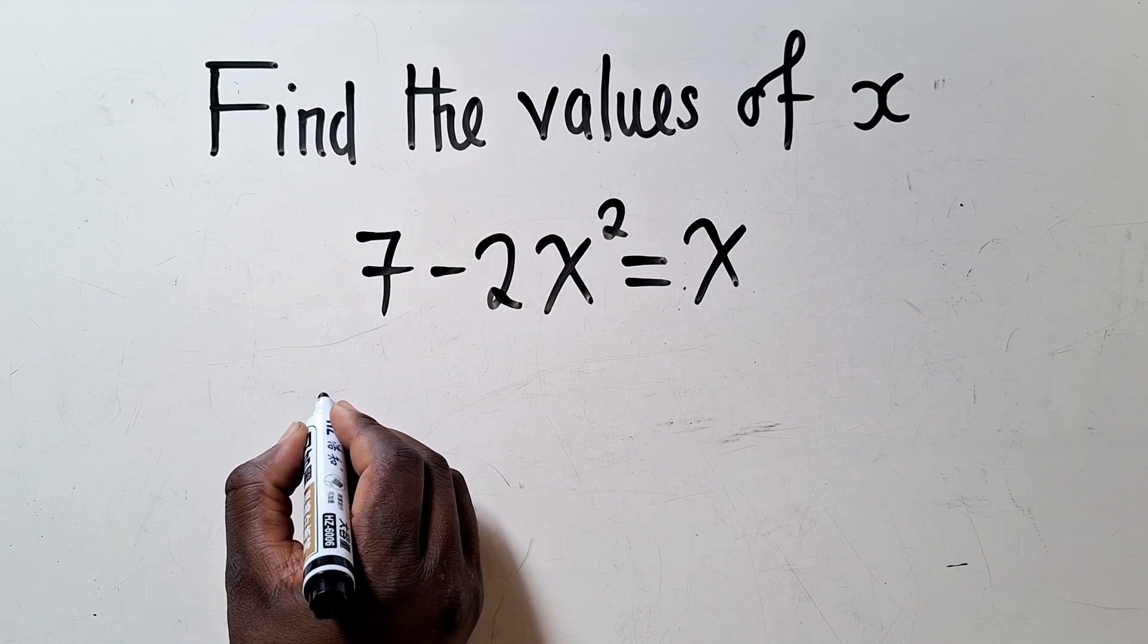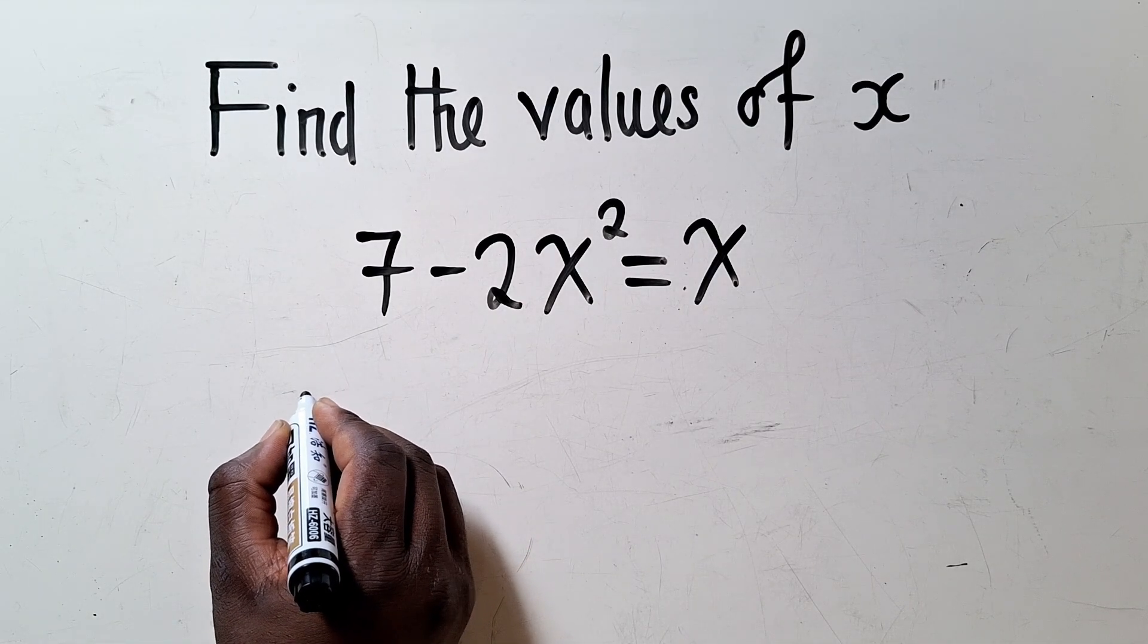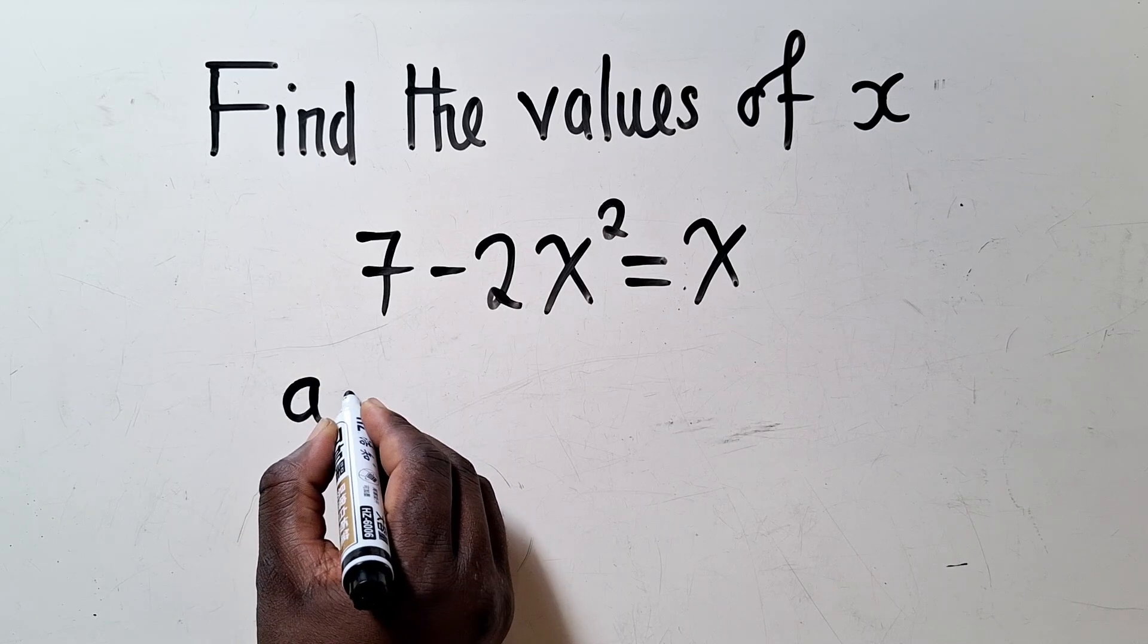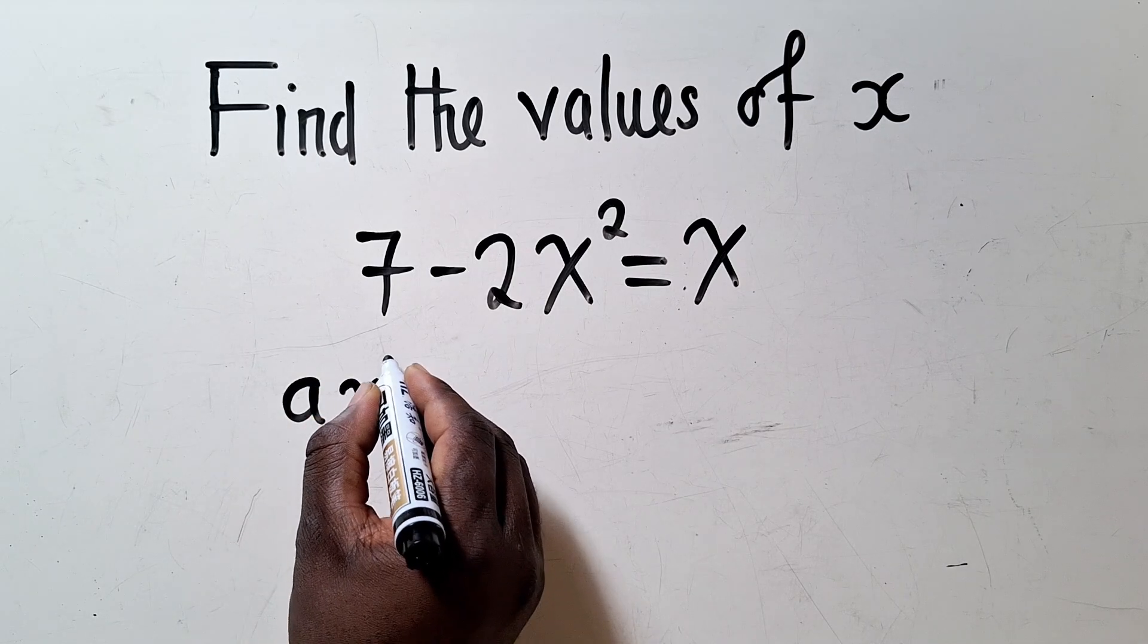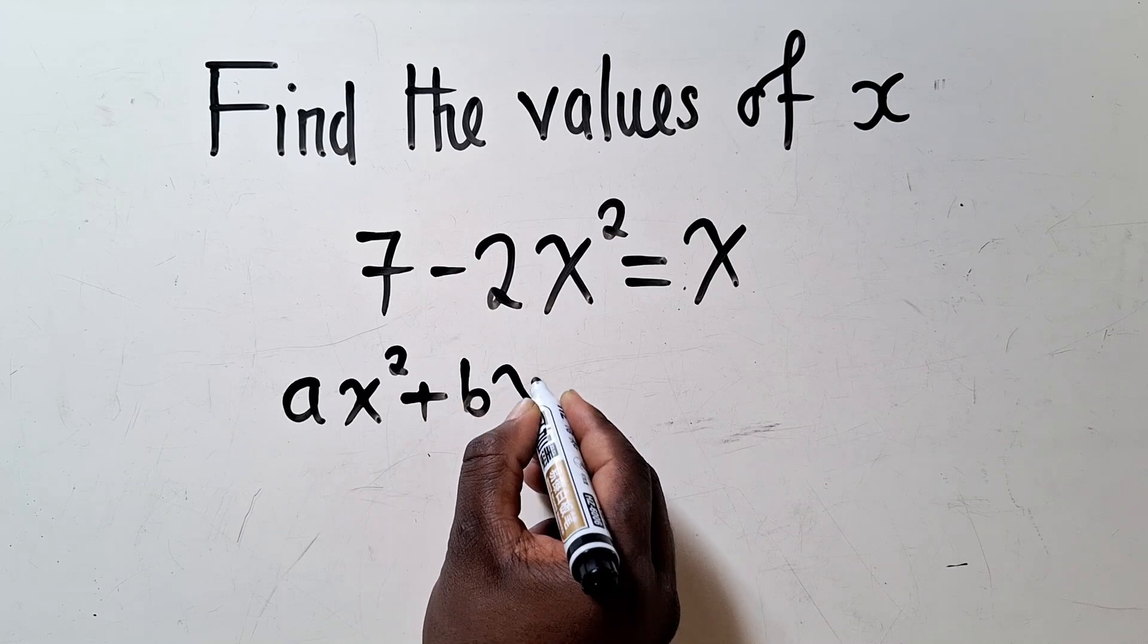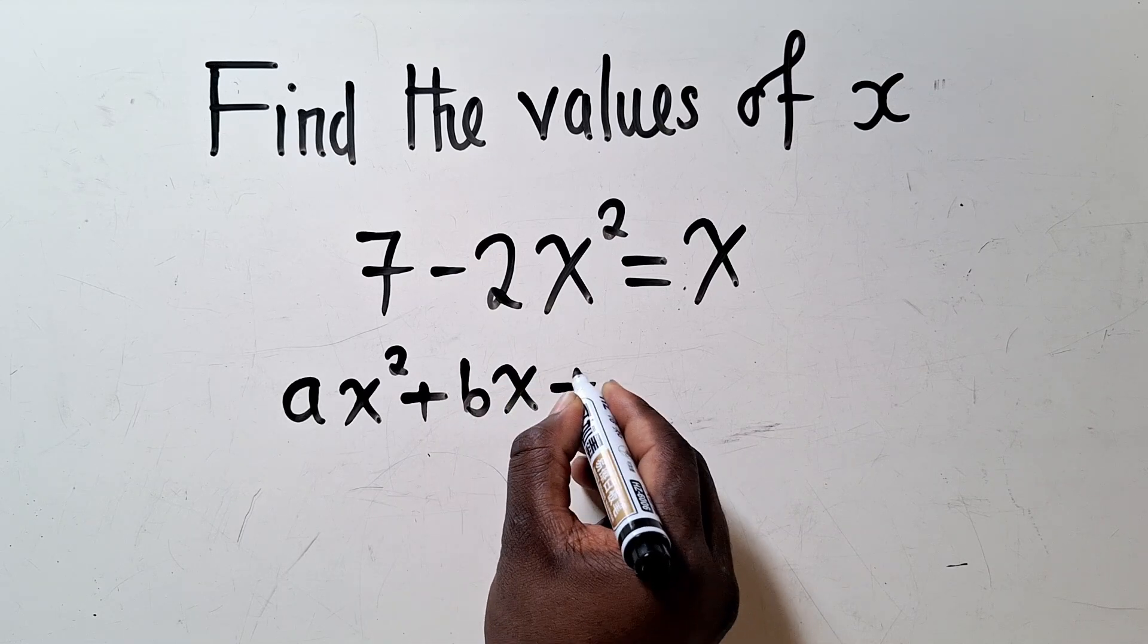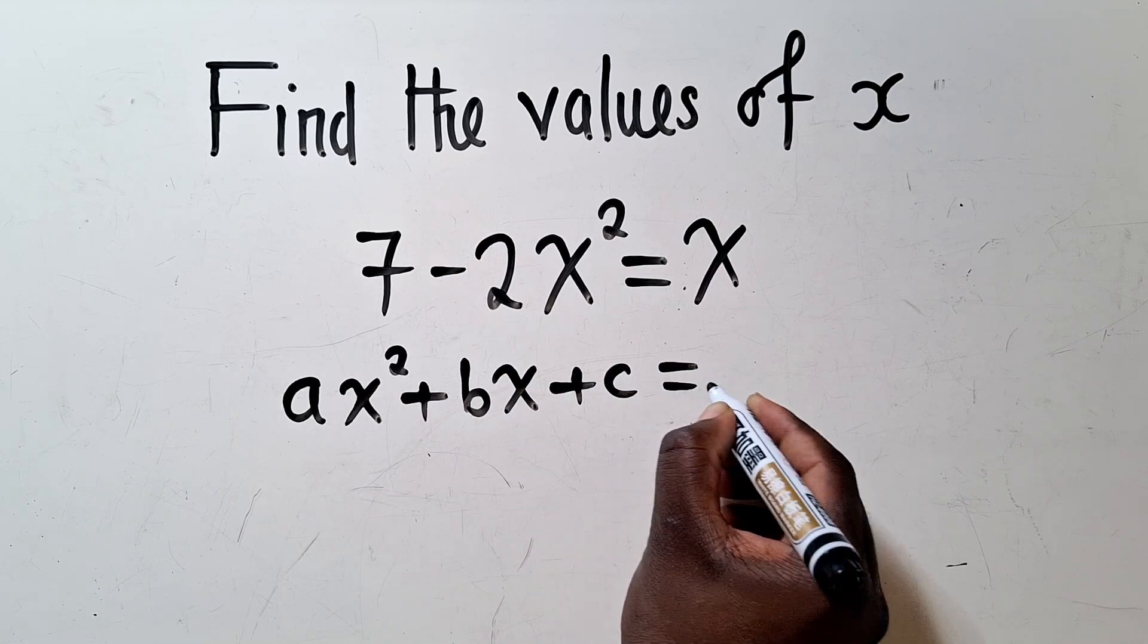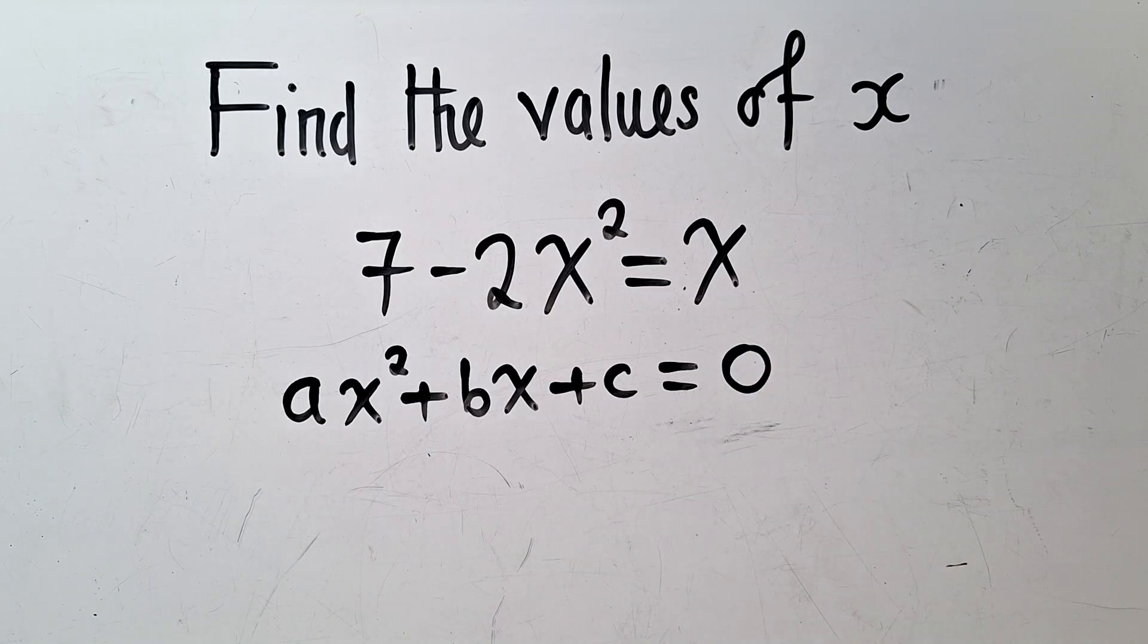Standard form of a quadratic equation looks like this: ax² plus bx plus c is equal to 0. This is the standard form of the quadratic equation.